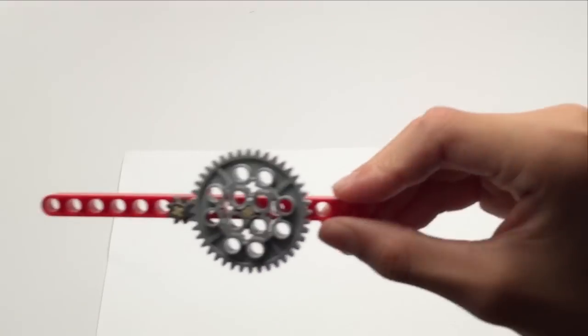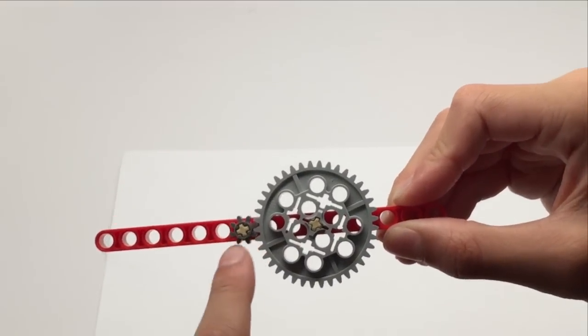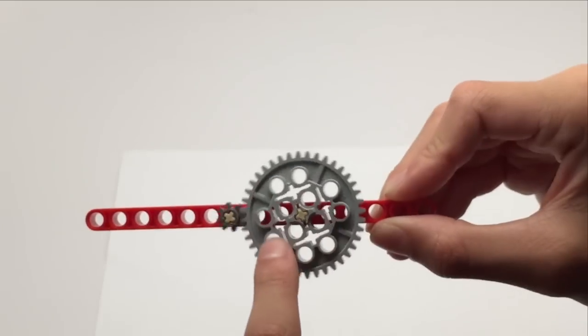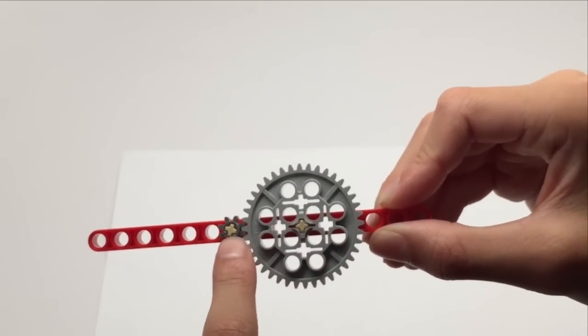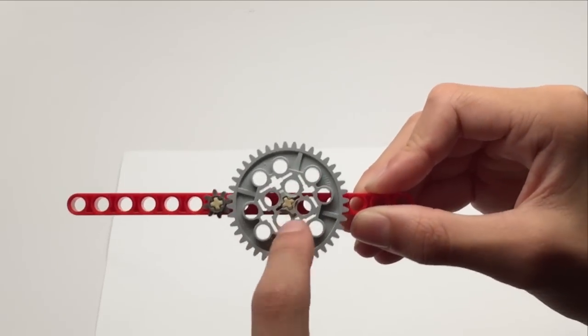You can speed things up or down by using gears. For example, we have the smallest gear here meshing with the largest gear here. And the smallest gear has 8 teeth while the largest gear has 40 teeth.